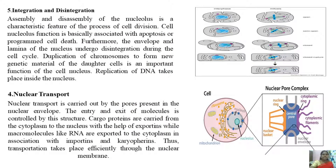The next function is integration and disintegration. The assembly and disassembly of the nucleolus is a characteristic feature of the process of cell division. The nucleolus function is basically associated with apoptosis, or programmed cell death, and furthermore the envelope and lamina of the nucleus undergo disintegration during the cell cycle. Duplication of chromosomes to form new genetic material for daughter cells is also an important function of the cell nucleus, and replication of DNA takes place inside the nucleus during the cell cycle.